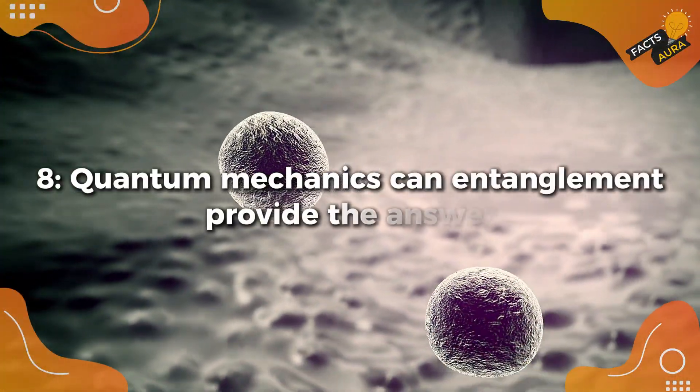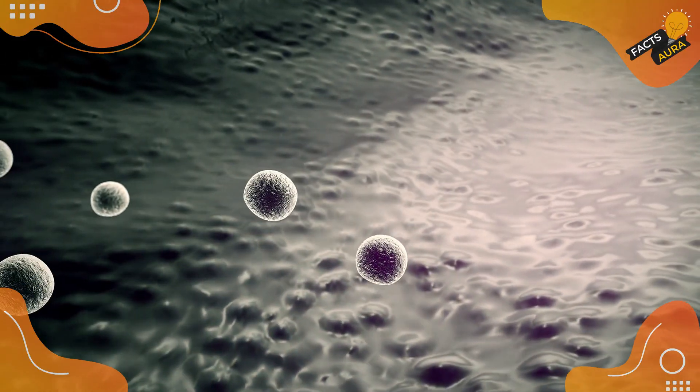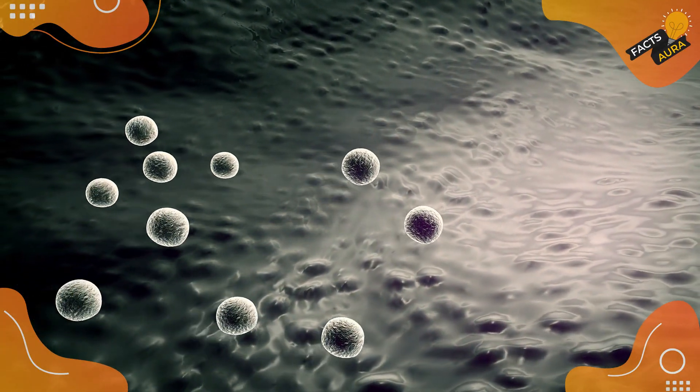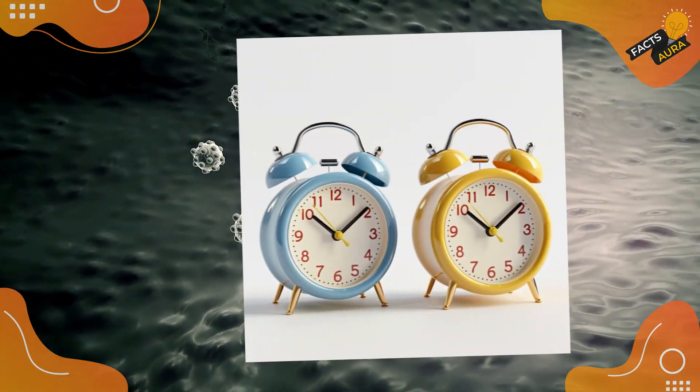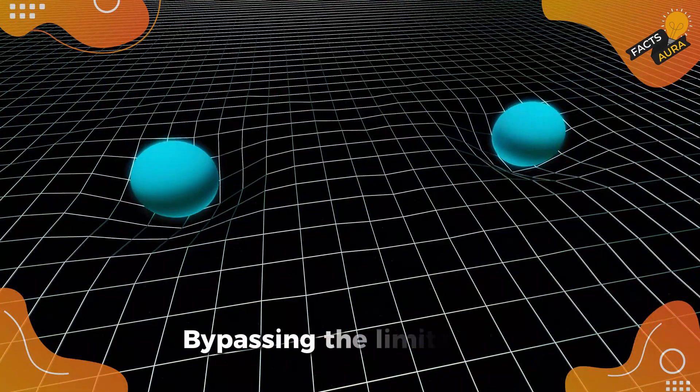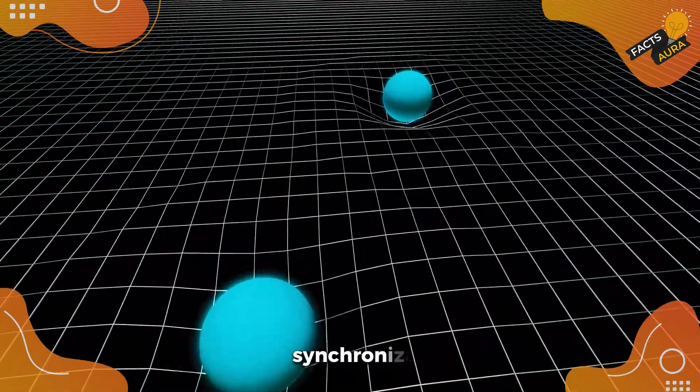Quantum mechanics: can entanglement provide the answer? Quantum mechanics might offer a way out of this conundrum. Quantum entanglement could, in theory, synchronize two clocks instantaneously over any distance, bypassing the limitations of light speed synchronization.